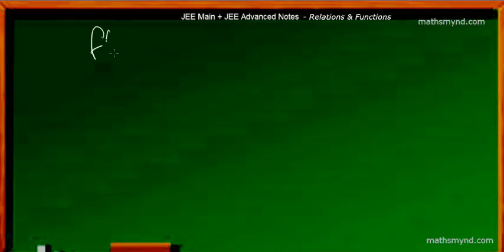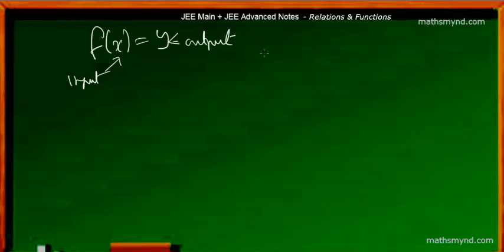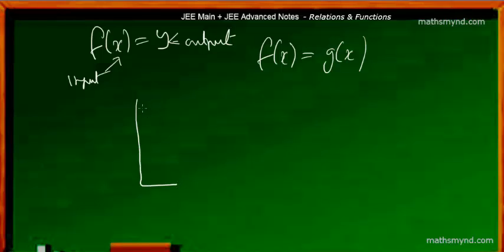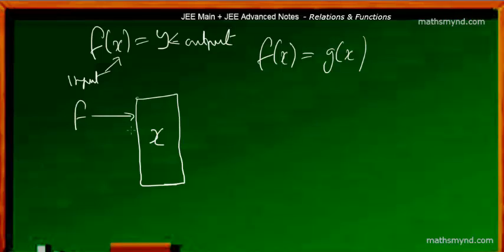We know that the common representation of a function is f of x is equal to y, that is x is the input and y is the output. The basic meaning of f of x is equal to g of x is that this box represents the input — all probable inputs. If inputs can range from x1 to x-alpha, all probable input values are the same for both function f and function g.